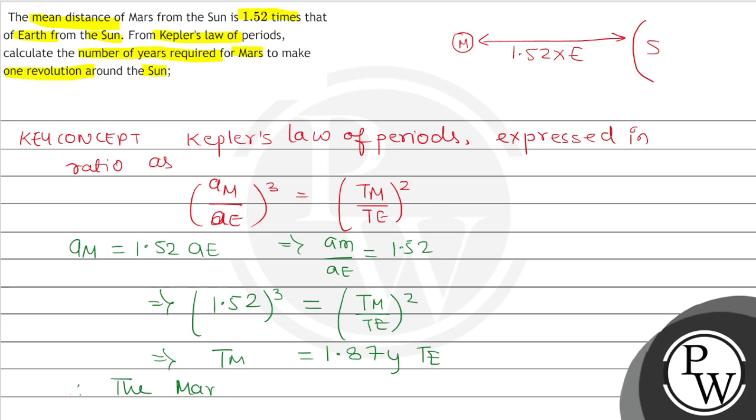Therefore, Mars takes 1.87 years to complete one revolution of sun. So this is the required answer.